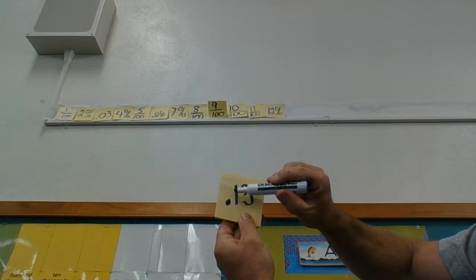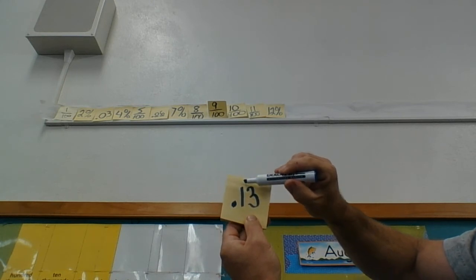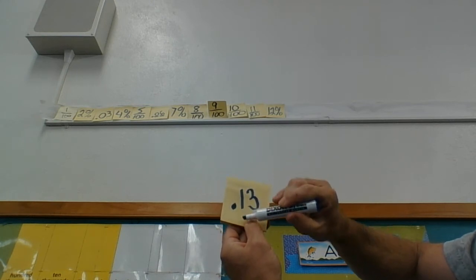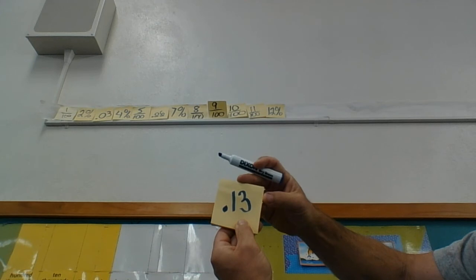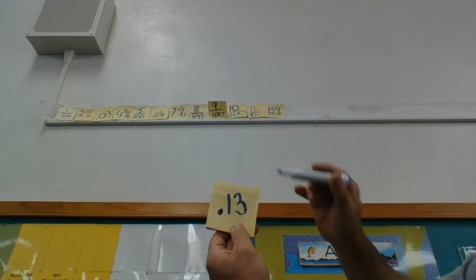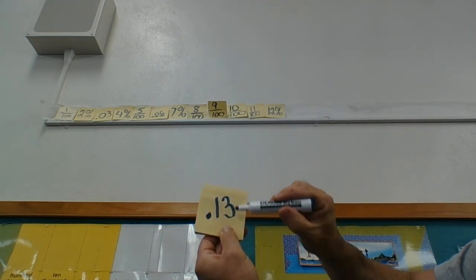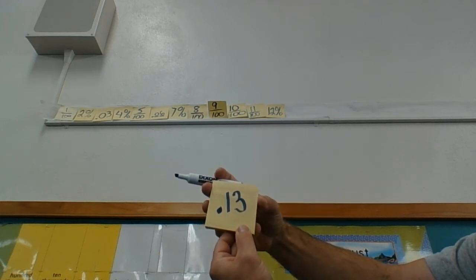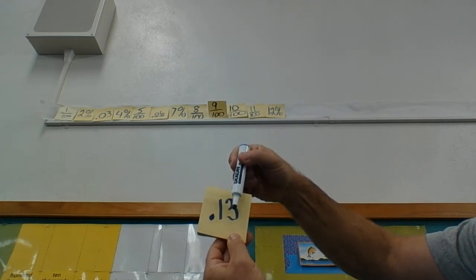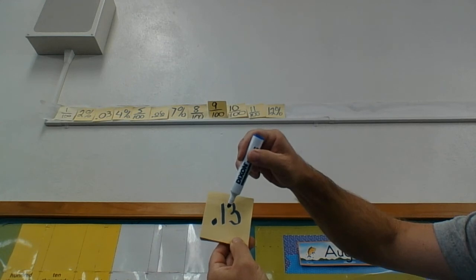We went over a couple days ago when we did our 10th day of school, that this place value is tenths, where the wholes have been cut up into 10 equal pieces. And this second place value to the right of the decimal point is the hundredths place value. And so for today, we have 13 hundredths.